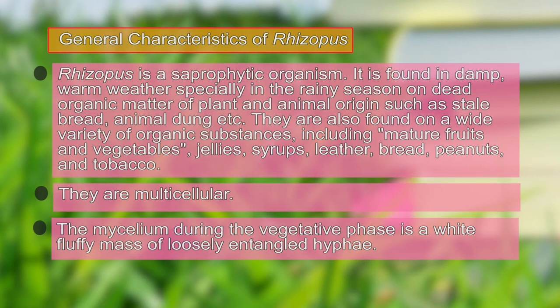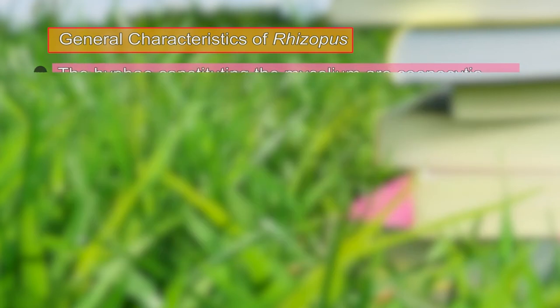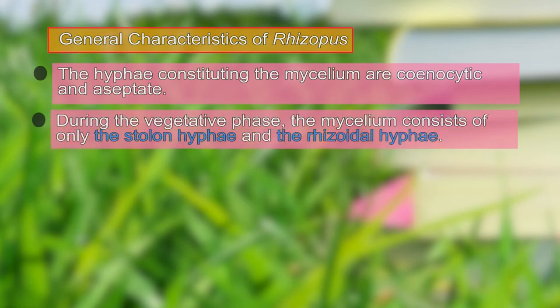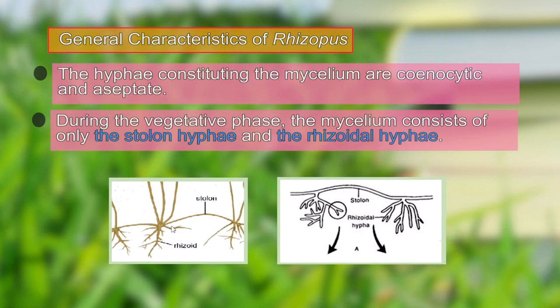The mycelium is an entangled mass of hyphae. The hyphae constitute the mycelium, which is coenocytic and aseptate — meaning within the hyphae there is no partitioning. During the vegetative phase, the mycelium consists of two types of hyphae: stolon hyphae, which grow over the substrate, and rhizoidal hyphae, which penetrate inside the substratum to obtain nourishment.